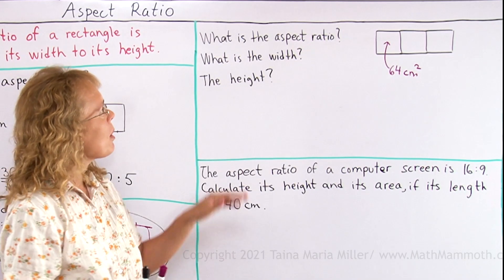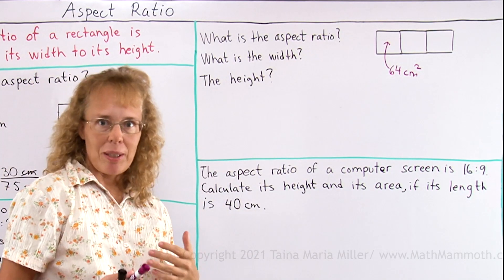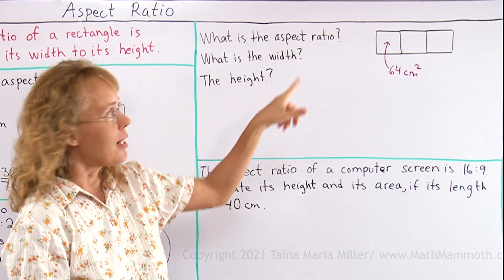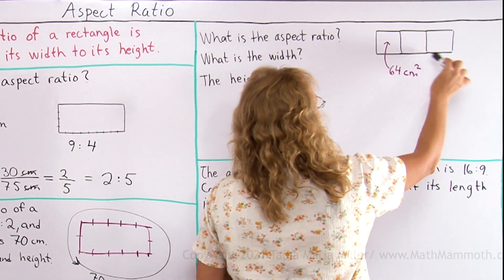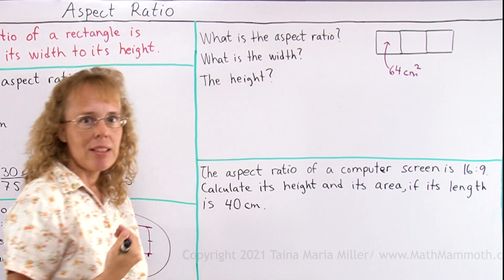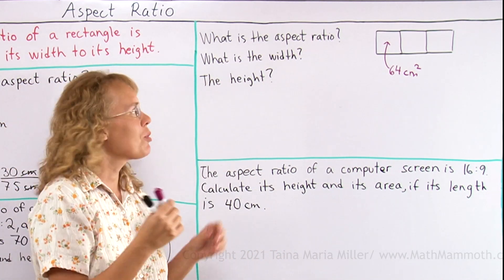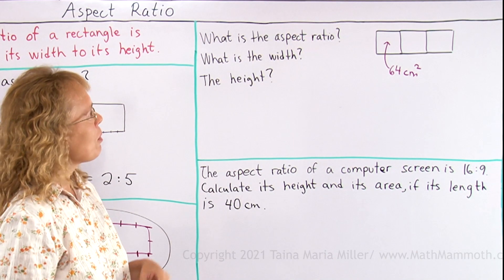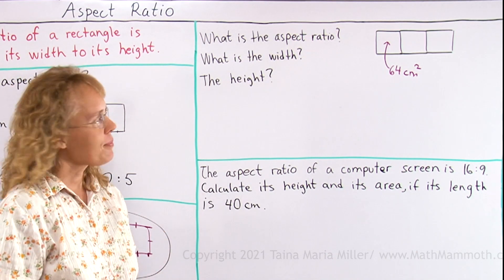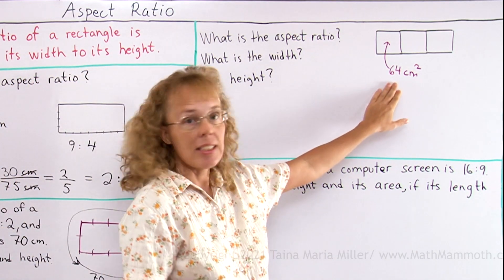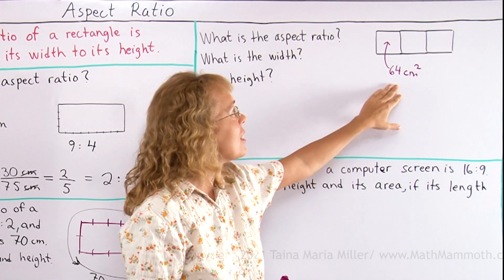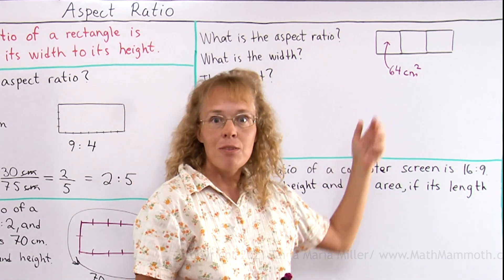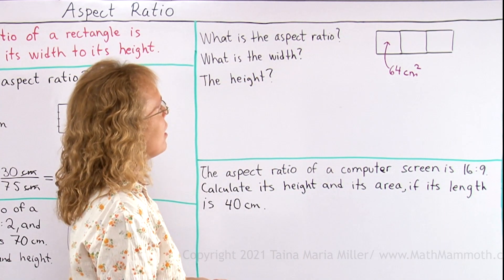Here's an interesting problem. It's asking what is the aspect ratio of that rectangle. Okay? This is a rectangle. We are asked its aspect ratio. It consists of three squares put together side by side. And what is the width and the height? And this here 64 square centimeters is obviously the area of one of those squares.